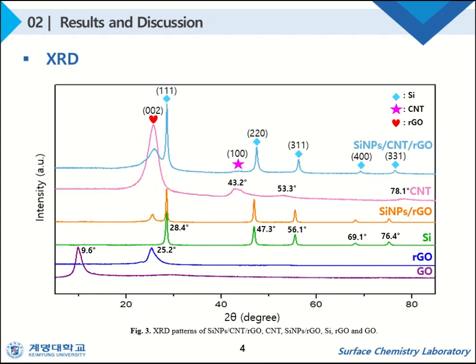In the Silicon Nanoparticles, Carbon Nanotube, Reduced Graphene Oxide composite film, it was shown that the peak of amorphous carbon, the crystalline silicon peaks, and the carbon nanotube peaks all appeared, suggesting that the structure of each component remained unchanged even after the reaction and the composite film was successfully synthesized.